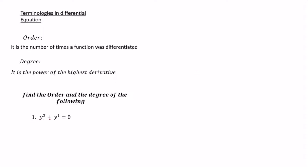Example 1: given y² + y' = 0, find the order and the degree. Since the highest derivative present is the first derivative (y'), the order is 1. The exponent on that derivative is also 1, so the degree is 1.